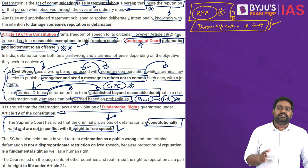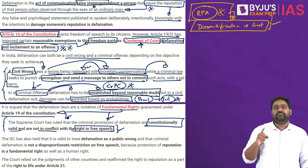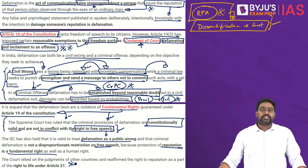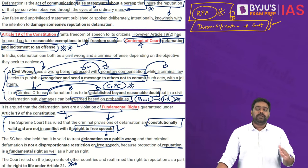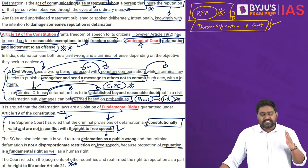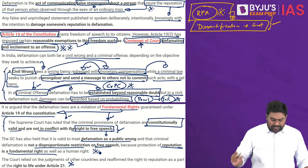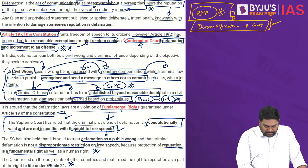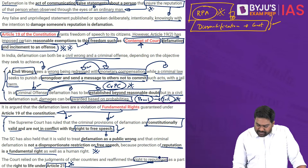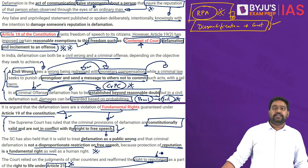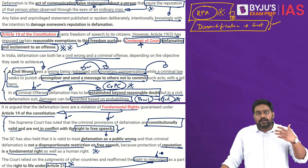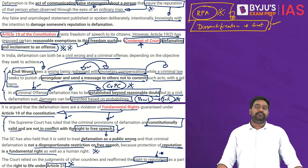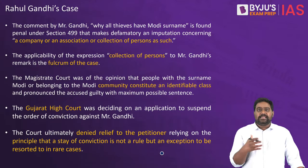Concerns have been expressed by activists and experts about the possible misuse of defamation laws. If you look at various judgments of high courts and the Supreme Court, defamation has been constitutionally upheld. The Supreme Court has repeatedly ruled that defamation is a reasonable restriction on the fundamental right to free speech. The Supreme Court has even interpreted that individuals have a right to their reputation as part of right to life, dignity, and personal liberty under Article 21.